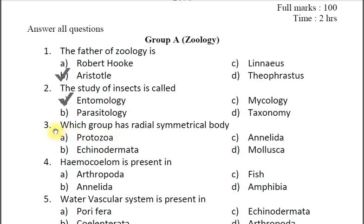Question three: Which group has a radially symmetrical body? A protozoa, B echinodermata, C annelida, D mollusca. The correct answer is B echinodermata. Echinodermata, which includes sea urchins and starfish, have radial symmetry. In addition, cnidarians which include jellyfish, sea anemones and coral also have radial symmetry.